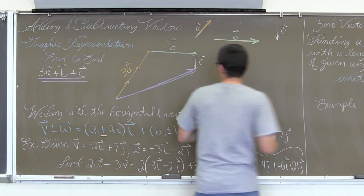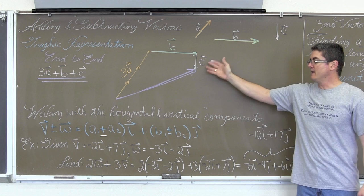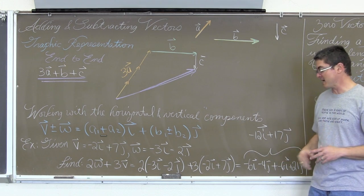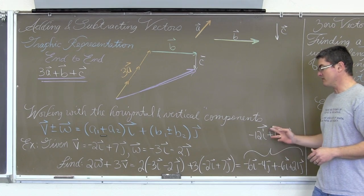This is how you add or subtract vectors and do scalar multiples with simple drawings going end to end. And this is an example of combining scalar multiples and adding and subtracting vectors in terms of their horizontal and vertical components.